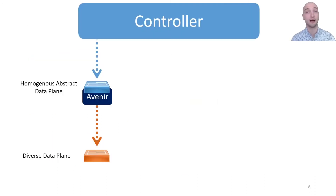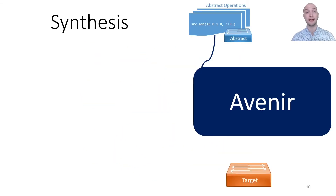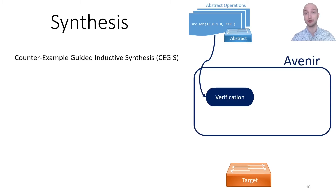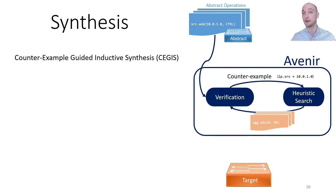So what does the deployment of Avenir buy us? Avenir interposes between the controller and an individual data plane switch, hiding the specific details from the controller so that supporting a diverse data plane is automatic. To do this, Avenir employs a well-studied heuristic search algorithm called counter-example guided inductive synthesis, or CEGIS. First, the verification stage checks whether the abstract operation is already implemented on the target switch, which is not the case for the example rule from before. So the verification stage produces a counter-example that witnesses the behavioral discrepancy, identifying packets that have a source address that hit the newly added rule. This counter-example guides the heuristic search to create a candidate set of operations which are passed to the verification stage. The algorithm continues searching until the heuristic search generates a correct sequence of candidate operations, which are then installed into the target switch.